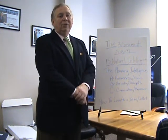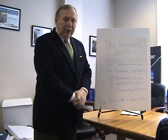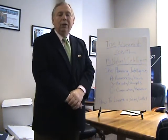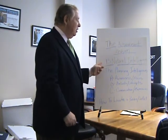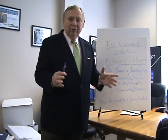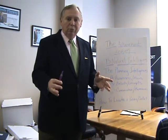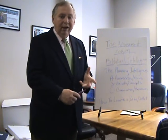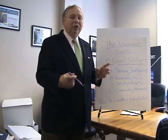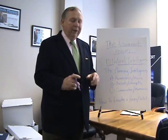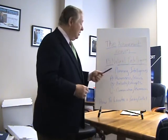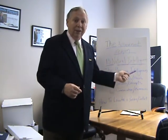Hi there. Today is Tuesday, March 5th, 2013, and this is Dr. Bob Flower with the Achievement Forum. We've been talking about our discovery of the natural intelligences, and they break down into three organized groups — planning, organizing, and functioning — and those three then break down into 13 intelligences. Today we're going to talk about the first group of intelligences, which we call the planning intelligences.